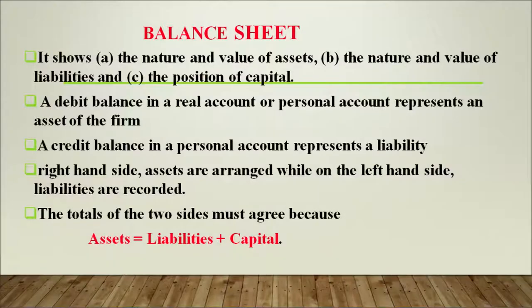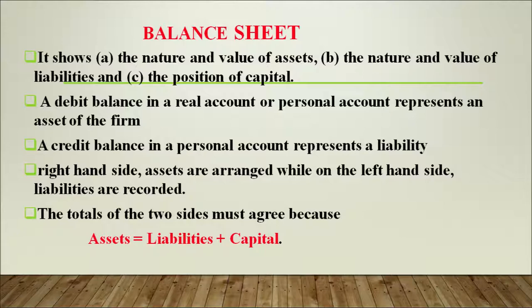Therefore, we will now start arranging our assets and our liabilities — ordering them in some particular order. Before we do this, we must remember that at the end of making the balance sheet, the asset side must be equal to your liabilities plus capital, that is your left hand side. The balances of both sides must be equal — then only are your accounts accurately made, remember learners.